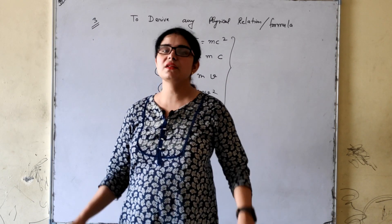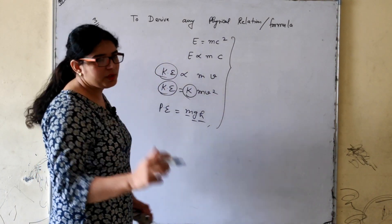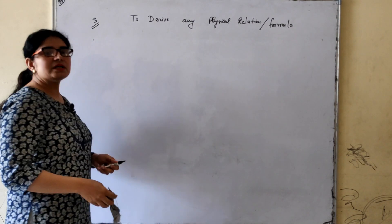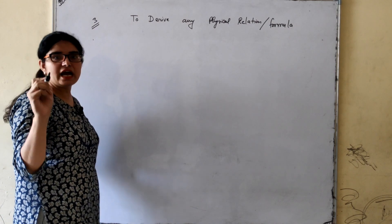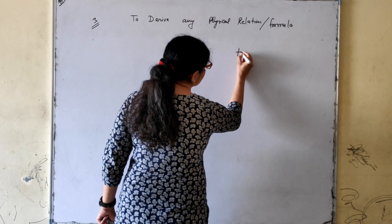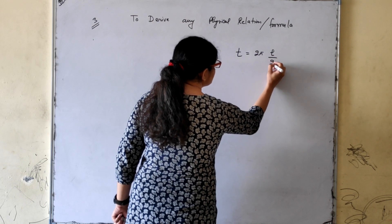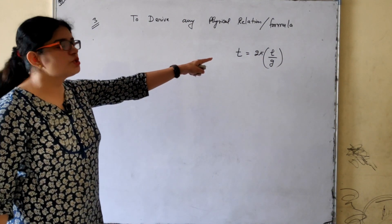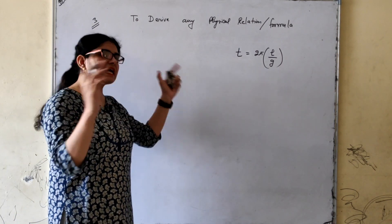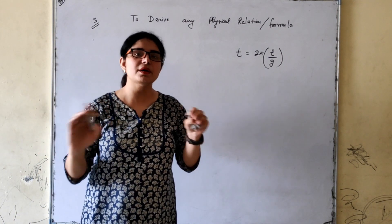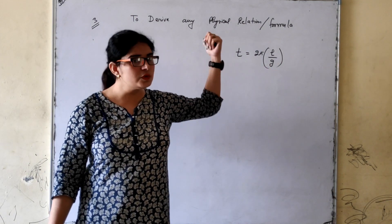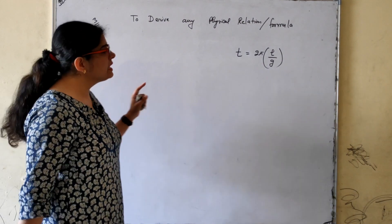Now I have a very interesting question that combines both application one and application three. The question says: check whether the equation T = 2π√(l/g) is correct or not, and if not, derive the correct formula. Here T is the time period of a simple pendulum, l is the length of the string, and g is acceleration due to gravity.